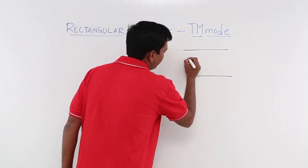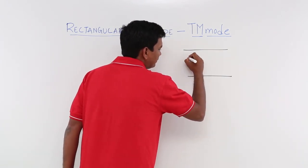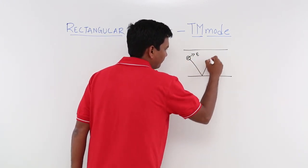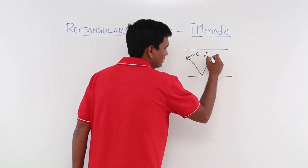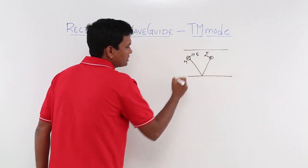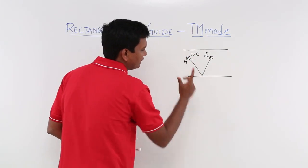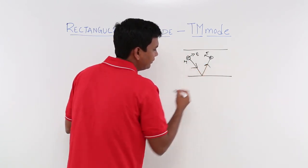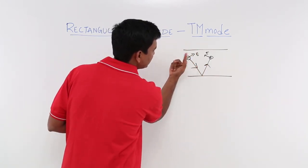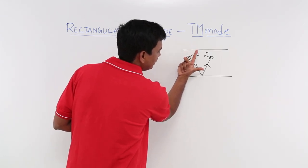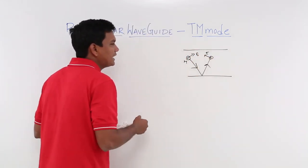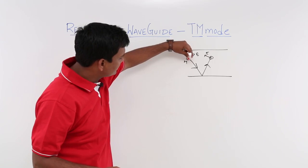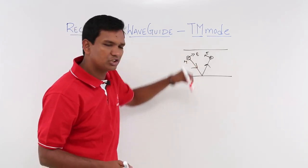Let us understand this with a small figure. Let us say this is my electric field and this is how it is propagating. So this is E. What we are saying is, the magnetic field is outside the board. If I use my right hand, this is my magnetic field. You see the direction of propagation. I will have to point the thumb in the direction of propagation. This is my electric field, and this is how the magnetic field behaves. If I hit here, again with reflection, it will be like this. So the magnetic field at all points is outside the board. So I can say that if it is outside the board, it is perpendicular to the direction of propagation.